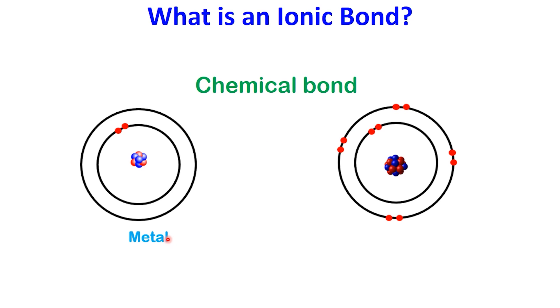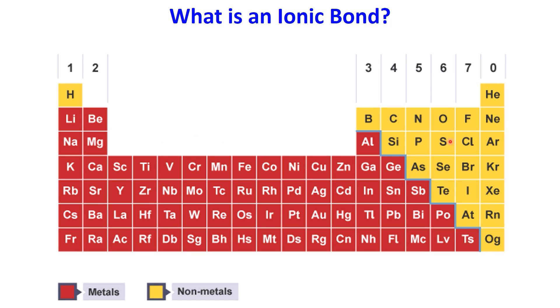This usually happens between a metal and a non-metal. If we look at the periodic table, we can easily see where these elements are. Metals are located on the left and center parts of the table. Non-metals are grouped on the top right side.